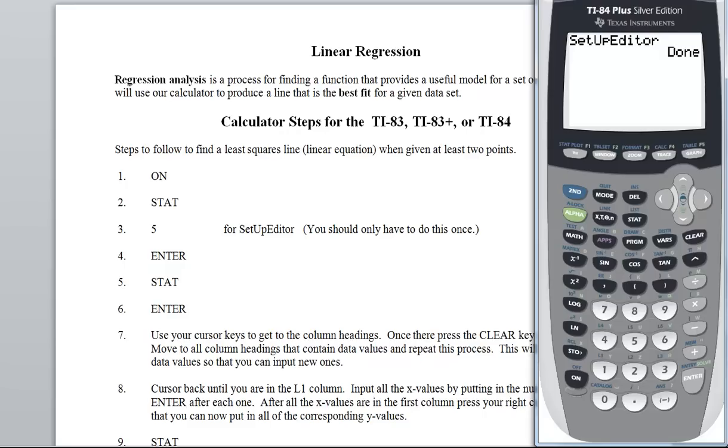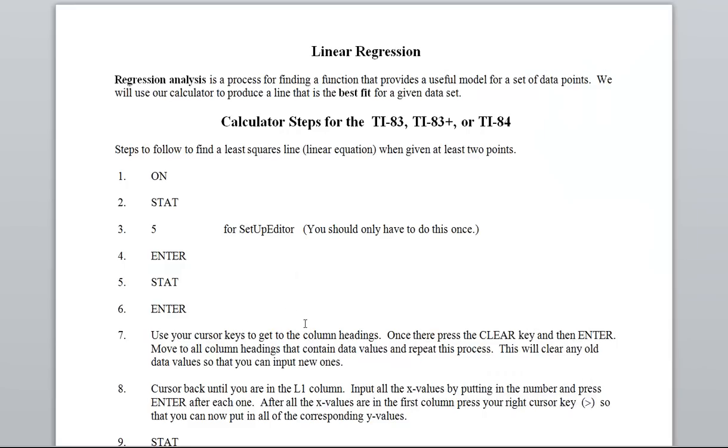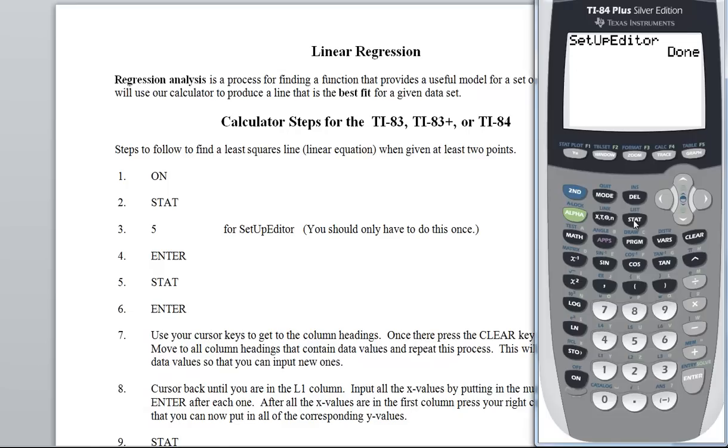Now it says use your cursor keys to get to the column headings. I have to go and press STAT and then hit enter. Press STAT, when you press STAT we won't be using 2, 3, 4, we shouldn't have to use 5 anymore. So it said in step 5 to press STAT and then hit enter. So let's go edit. Some of you might have data values and some of you might not. Use your cursor keys to get to the column headings. Since I've got my cursor right now is here, let me go up and notice I'm on my column heading.